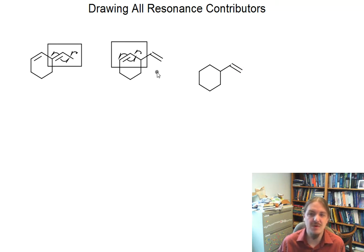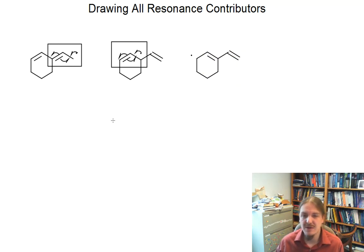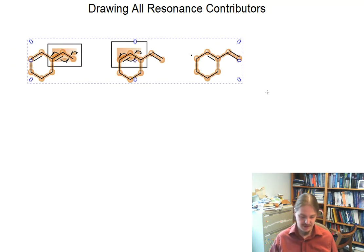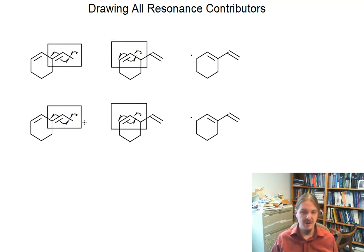And notice how as I'm drawing each individual resonance contributor, I am leaving the structure of the rest of the molecule alone. One of the important things to remember in organic chemistry is while you may be doing some kind of resonance or chemical change in one part of the molecule, generally it's contained to that one part of the molecule. And so here are the three resonance contributors. I'm going to make a copy of them and remove all of the arrows and boxes and things so that we can clearly see the three radicals.